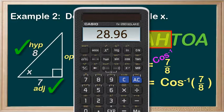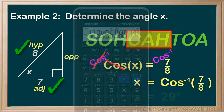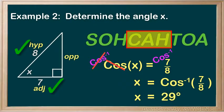But in the end, you should be getting 28.96, or rounding a little bit, 29 degrees.